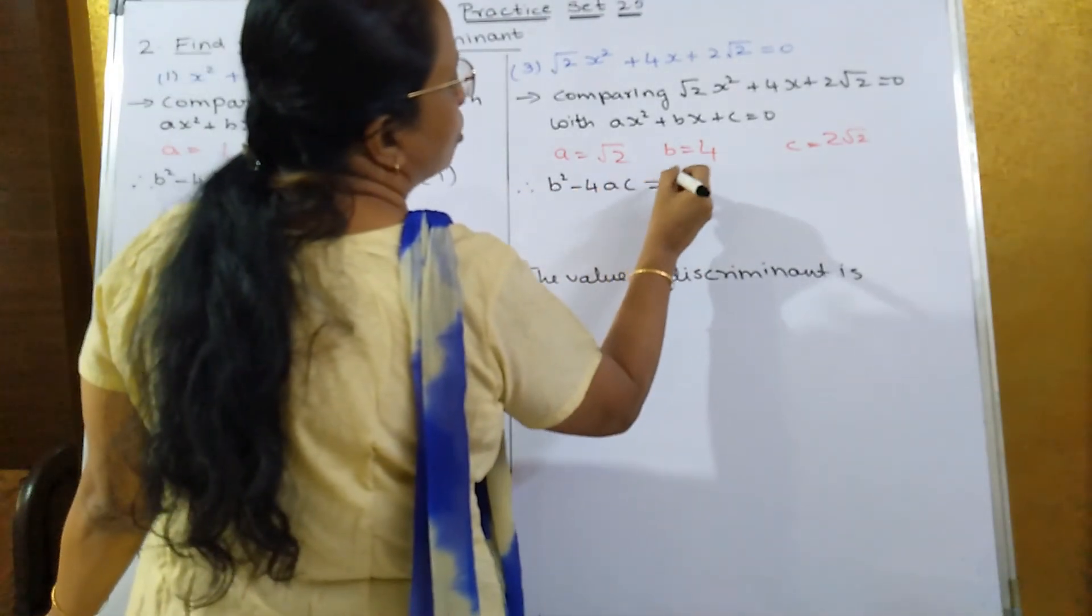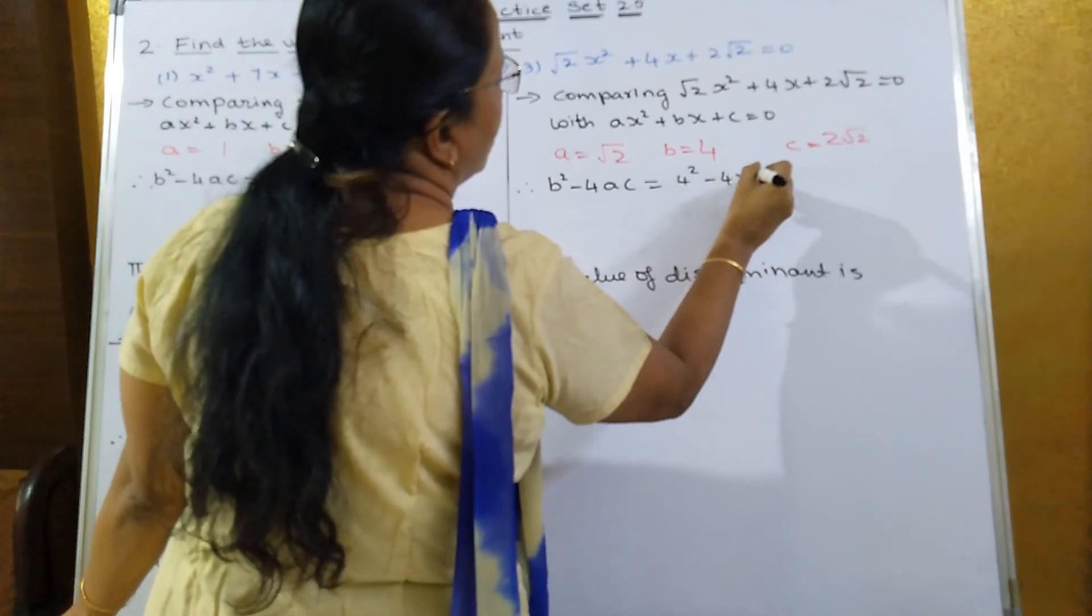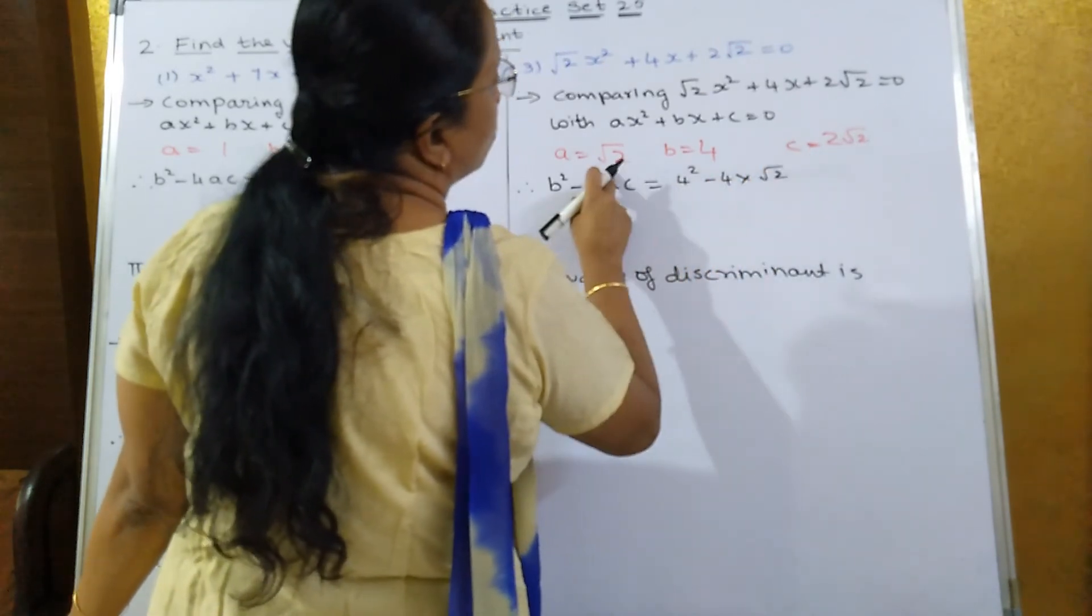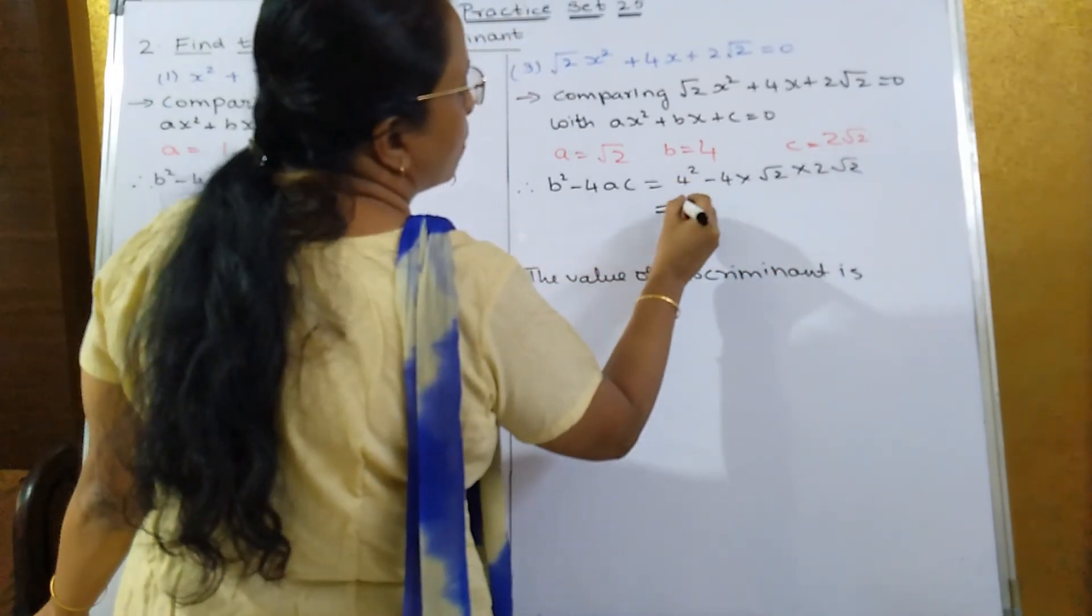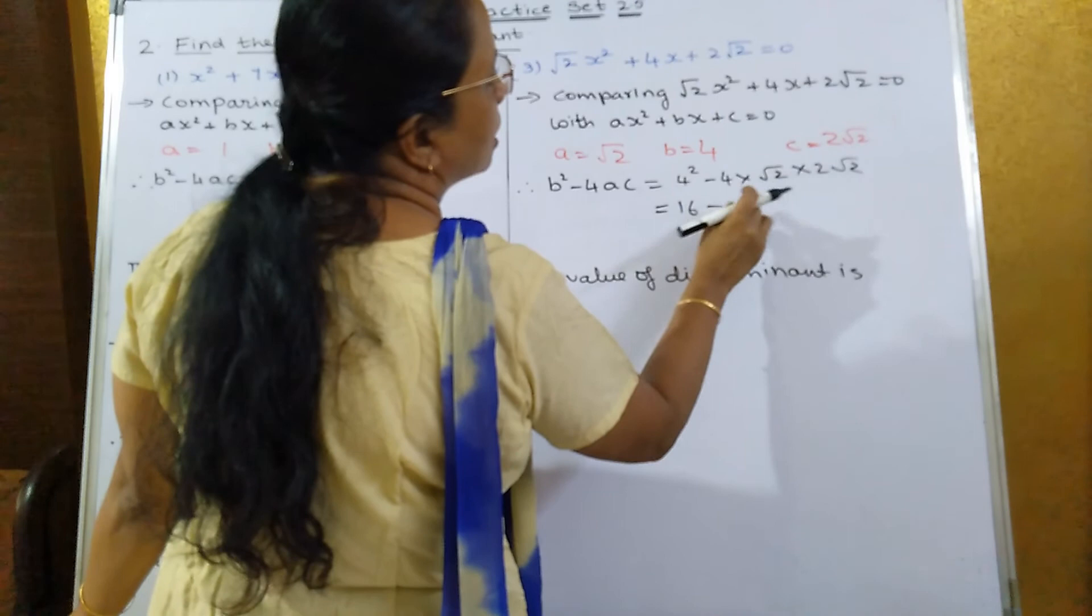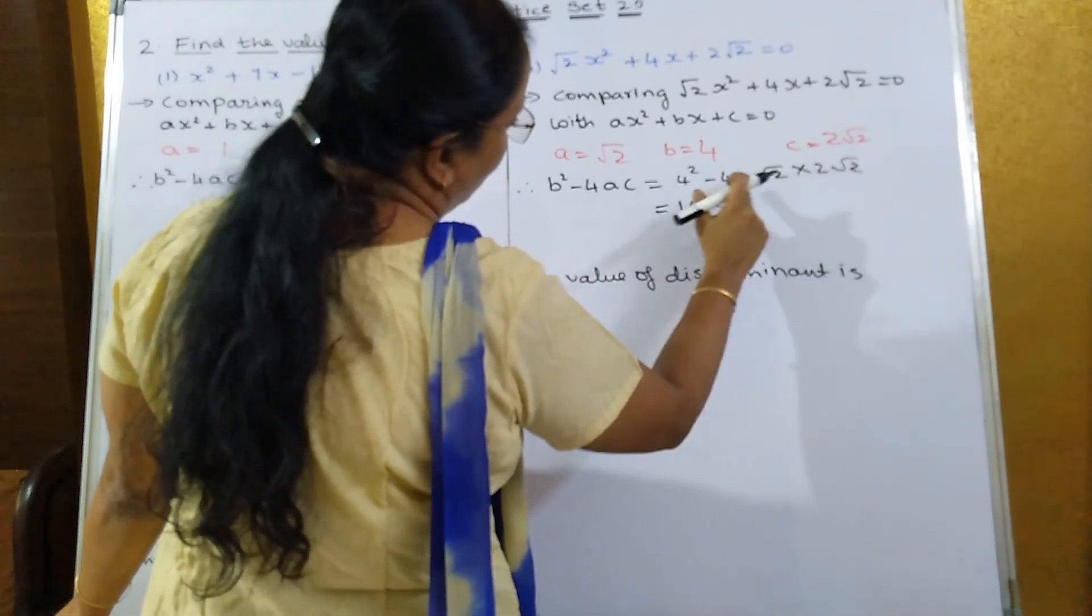b over here is 4 squared minus 4 into a, is how much? √2. And c is how much? 2√2. So that is equal to 4 squared is how much? 16, minus √2 into √2 is 2. 2 into 2 is 4. 4 into 4 is how much? 16.